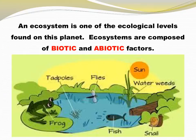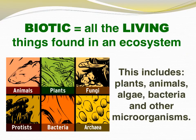An ecosystem is one of those levels we just discussed. Ecosystems are composed of the biotic and the abiotic factors found there. Biotic factors are all the living things found in an ecosystem. This includes plants, animals, algae, bacteria, and other microorganisms.